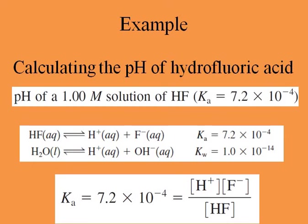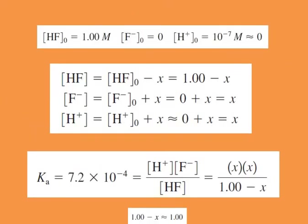Initially the concentration of HF is 1 mole per liter, and fluoride and proton are both zero — or we can say proton is 10⁻⁷ from water autoionization, but because it's so small we consider it zero. After constructing the ICE table: HF at equilibrium is 1 minus X, fluoride is 0 plus X, and proton is 0 plus X. So Ka equals 7.2 × 10⁻⁴, with X times X in the numerator and 1 minus X in the denominator.